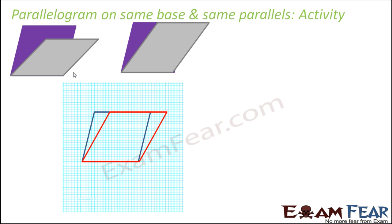This will be one parallelogram, and let the red one be another parallelogram with the same base. If you see, both parallelograms have the same base. And if you see these vertices and join them, it will form a line and this line will be parallel to the other line. So let us see: AB — the common base is CD for one parallelogram and EF is another parallelogram. Note the area of this red parallelogram and the area of the blue parallelogram. How will you find the area of this parallelogram?